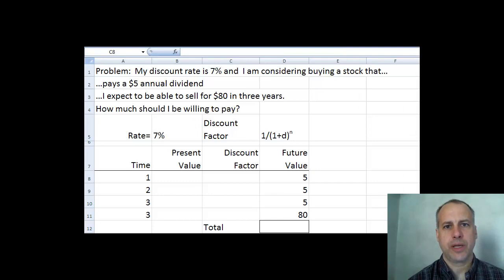Now we're going to do an example where we discount future values into the present. Suppose that I have a discount rate of 7% and I am considering buying a stock that pays a $5 annual dividend, and that I expect, based on my analysis, I will be able to sell for $80 in three years. That is, I expect that three years from now the share price will be $80 and I can sell it then.